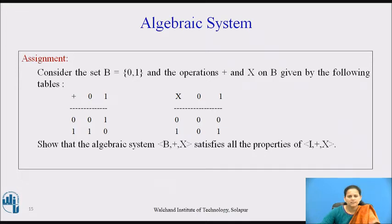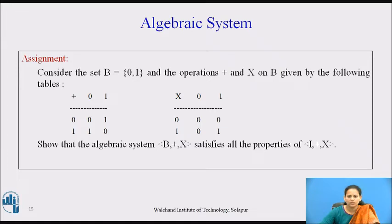From the first table for addition: 0 + 0 = 0, 0 + 1 = 1, 1 + 0 = 1, and 1 + 1 = 0. From the multiplication table: 0 × 0 = 0, 0 × 1 = 0, 1 × 0 = 0, and 1 × 1 = 1.